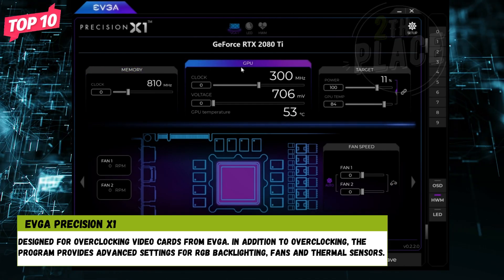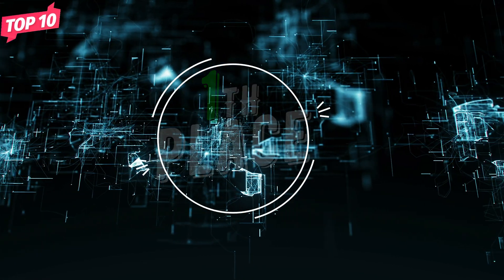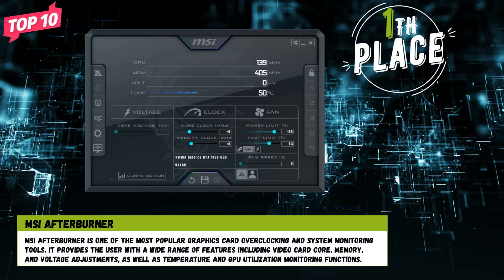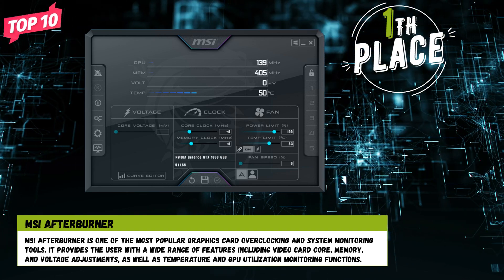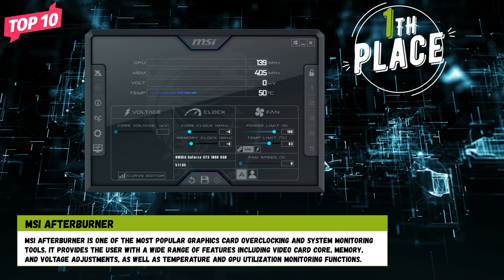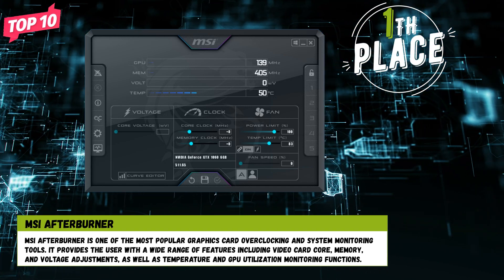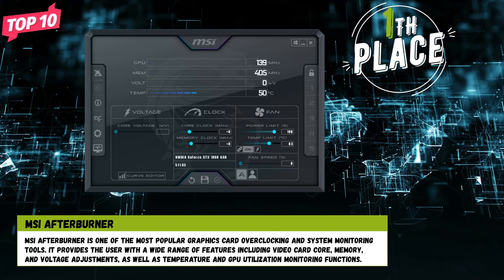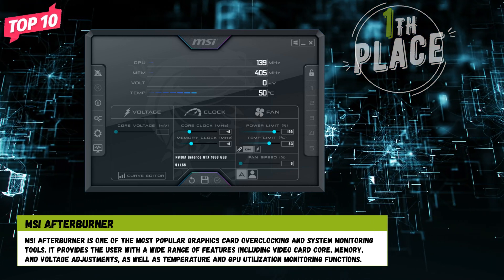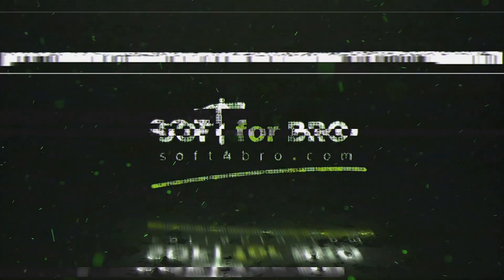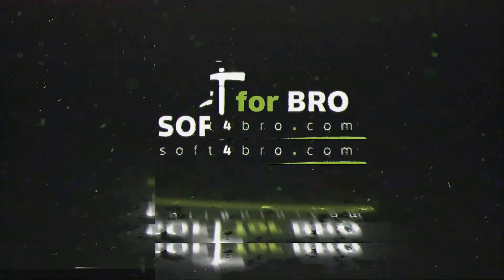First Place: MSI Afterburner is one of the most popular graphics card overclocking and system monitoring tools. It provides the user with a wide range of features including video card core, memory, and voltage adjustments, as well as temperature and hardware utilization monitoring. More programs at SoftBrow. Come subscribe to the channel and like it. Have a nice day.